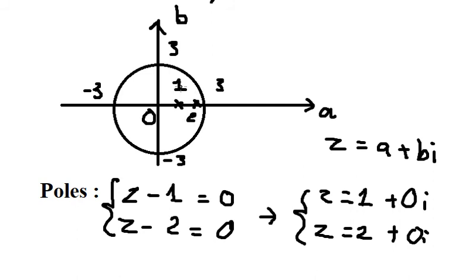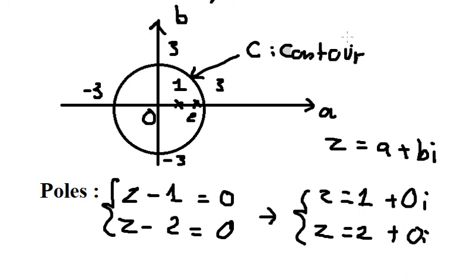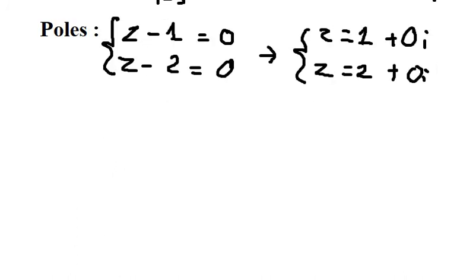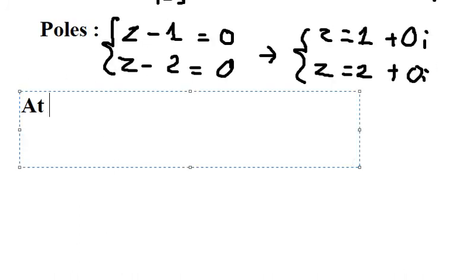We can see that both poles — z equals 1 and z equals 2 — lie inside the contour C. Now let's go to the next step, starting with z equals 1.